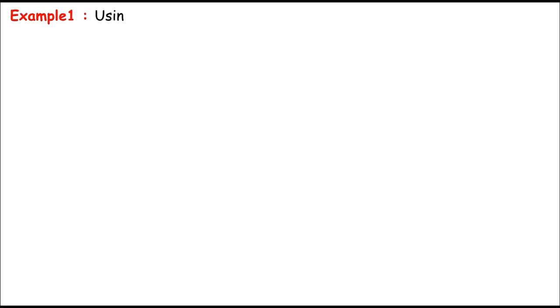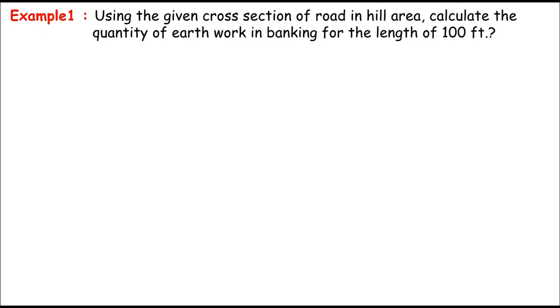Let's say this is example 1. Using the given cross section of the road in hill area, calculate the quantity of earthwork in banking for the length of 100 feet. The section is just a little bit over here.